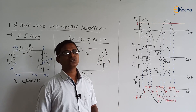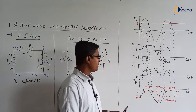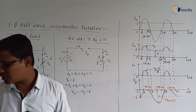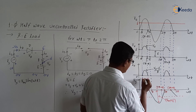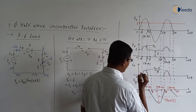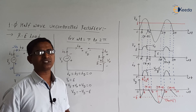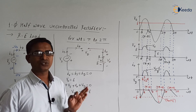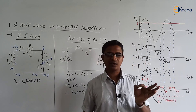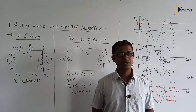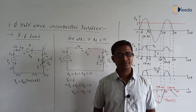After 2 pi, the same cycle repeats. The diode is in the on state only during the interval from theta to pi minus theta. For all other intervals, the diode is in the off state. This completes the circuit operation of single phase half wave uncontrolled rectifier with RE load. In the next video we are going to discuss the expressions of the same circuit. Thank you.